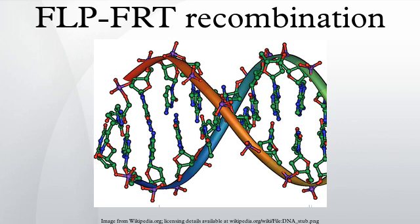It is analogous to Cre-lox recombination but involves the recombination of sequences between short flipase recognition target sites by the recombinase derived from the 2µm plasmid of Baker's yeast Saccharomyces cerevisiae. The 34bp minimal FRT site has the sequence 5'-GAAGTTCCTATATGTATATAGGAACTTC-3', for which flippase binds to both 13bp arms flanking the 8bp spacer, enabling site-specific recombination in reverse orientation.